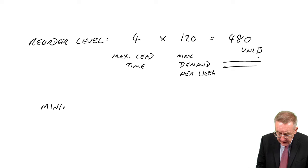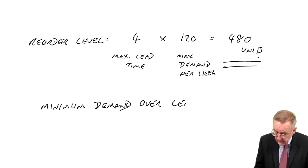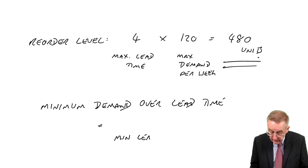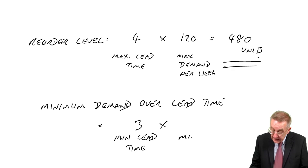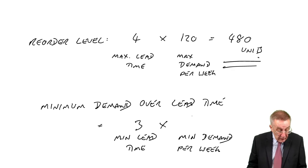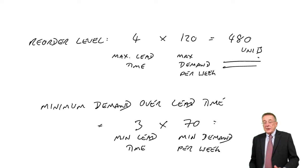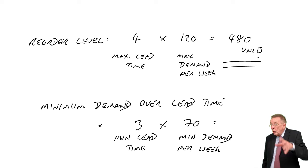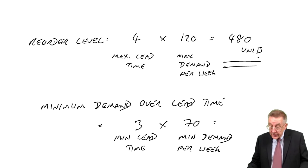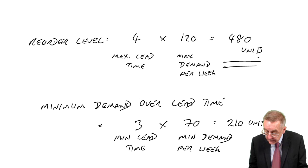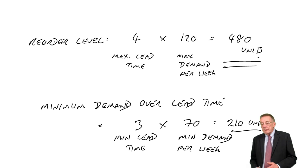What's the minimum demand over the lead time? The minimum we're going to need is the minimum lead time of three weeks times the minimum demand per week, which was 70. So the maximum we're going to need is 480. That's why I reorder when we 480 left. But the minimum we'd need on occasions, all we'll need is 210 units.